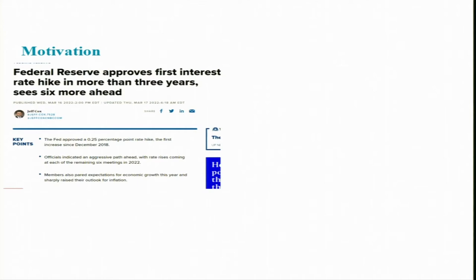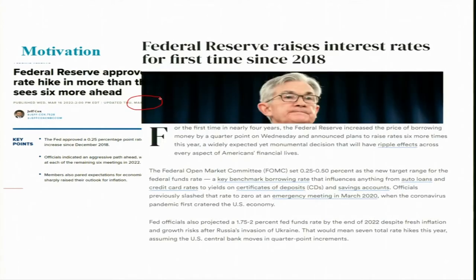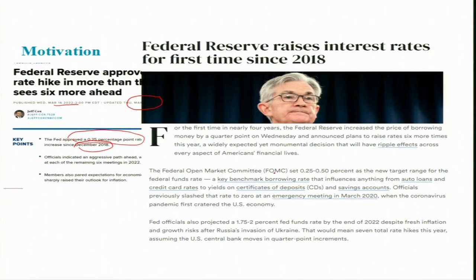In March 2022, the Federal Reserve raised interest rates for the first time since 2018. Because of the COVID crisis, there had been almost a pause in Fed fund rate changes. The Fed approved a 0.25 percentage point hike — the FOMC set 0.25% to 0.50% as the new target range for the Fed fund rate, which is the key benchmark borrowing rate influencing auto loans, credit card rates, certificate of deposit yields, and savings accounts.